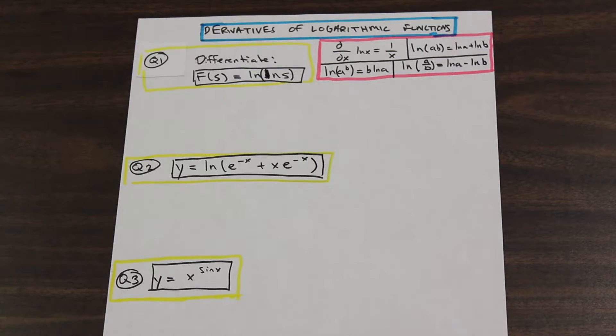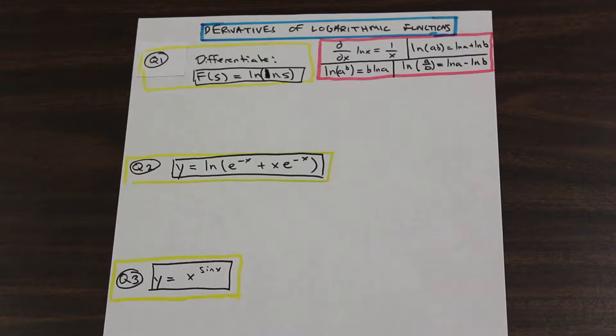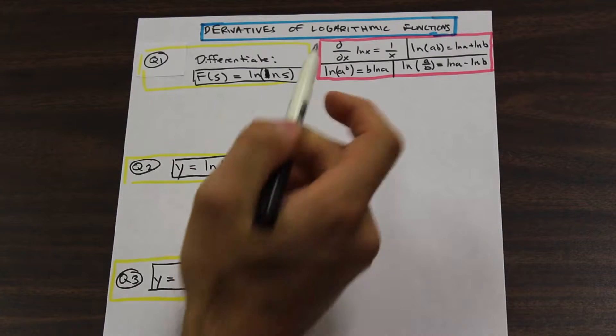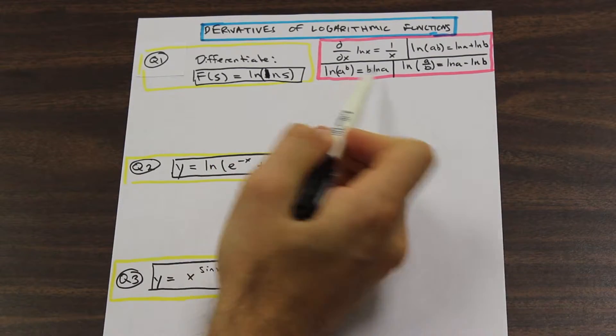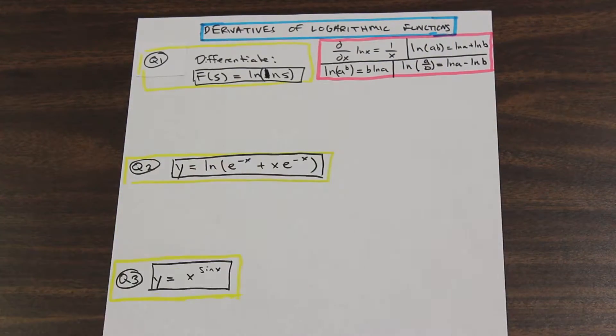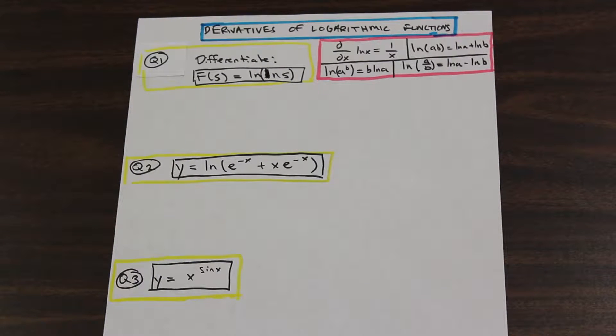Looking down in the bottom left, we have ln of a to the b. The cool thing about natural log functions or log functions is that you can take this b exponent and you can bring it down in front of the ln. And that is actually a really helpful tool when we're working with log functions, and it enables us to solve problems that otherwise we wouldn't be able to.